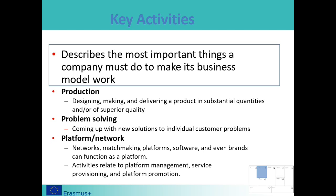The key activities cover the most important things a company must do to make the business model work. These may vary considerably from one company to the next. For example, the key activities of a PC manufacturer such as Dell could include production line management and supply chain management, whereas for a consultancy firm such as McKinsey, key activities might include problem solving. Another key activity for many companies with an active web presence is platform or network management.